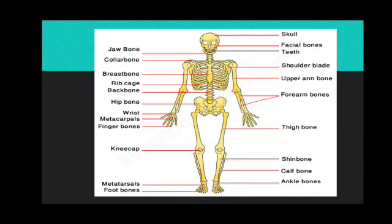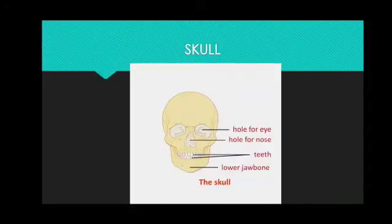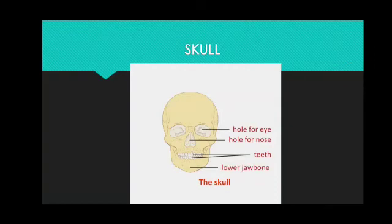We will start with the first one, that is the skull. The bones found in the head form the skull. The skull is made up of 22 bones — 8 bones form the cranium or brain case, which protects your brain, and 14 bones form the face. The only bone that can move in the skull is the lower jaw bone, which helps you to talk, eat, chew, and laugh.